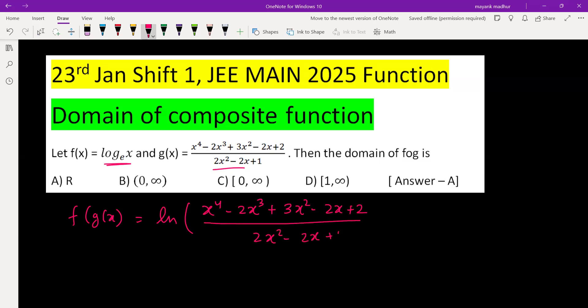For finding the domain of this function, we need two conditions. One is log and its input must be positive, so there is one condition: input must be positive, this term must be positive. Second thing is its denominator should not be equal to 0, so 2x² - 2x + 1 should not be equal to 0.